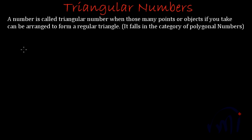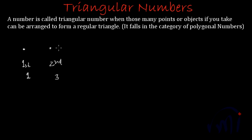If I take one point it can be represented like this, and this is the first triangular number. The second polygonal number is always the number of vertices in that polygon, so the second triangular number has to be 3. If I take 3 points I will construct a triangle like this — 3 vertices — and this makes a regular triangle.